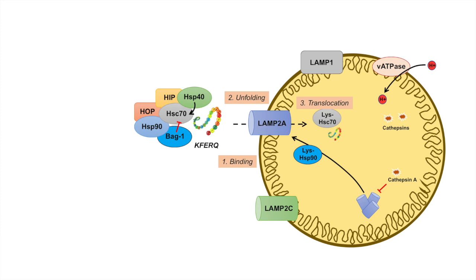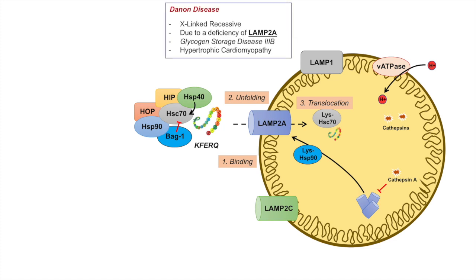Because LAMP2A is critically important for CMA function, a deficiency in LAMP2A causes a particular disease known as Dannon disease. Dannon disease is an X-linked recessive disorder due to a deficiency of LAMP2A. It is also known as glycogen storage disease 2b, and it leads to hypertrophic cardiomyopathy along with other symptoms.